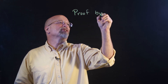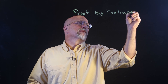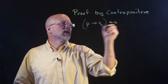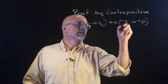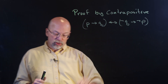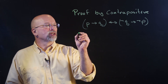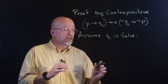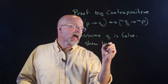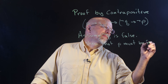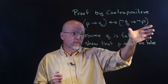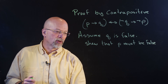In our previous video, we showed that there was such a thing as the contrapositive — P implies Q if and only if NOT Q implies NOT P. If you're interested in the truth table for that, it is in the previous lesson. Basically, what we do is we assume Q is false, and by assuming Q is false, show that P must be false. If assuming Q is false implies P is false, that is equivalent to showing that P implies Q.